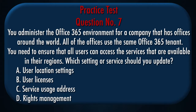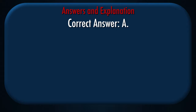Question number seven. You administer the Office 365 environment for a company that has offices around the world. All of the offices use the same Office 365 tenant. You need to ensure that all users can access the services that are available in their regions. Which setting or service should you update? A. User location settings. B. User licenses. C. Service usage address. D. Rights management. Correct answer: A.